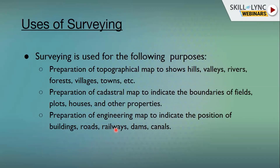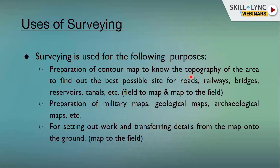The uses of surveying: one use is to prepare a topographical map, which gives information about topography such as hills, rivers, valleys, forests, towns, villages, etc. Another use is to prepare a cadastral map — fixing the boundaries of fields, properties, plots, and houses. And to prepare an engineering map for building things related to engineering such as buildings, roads, canals, and dams. Based on vertical height, a contour map is prepared to plan the best possible alignment for a road or canal.